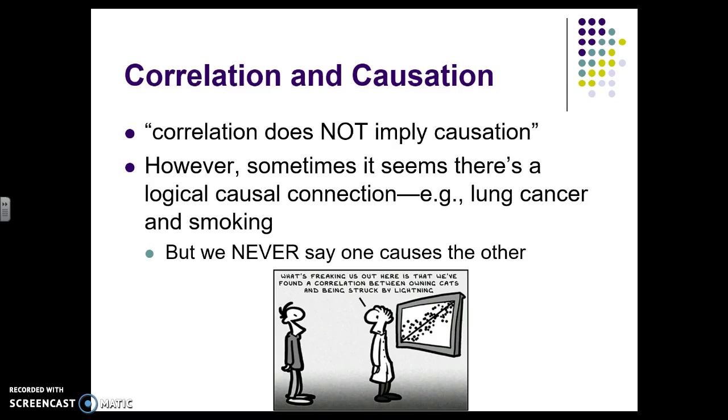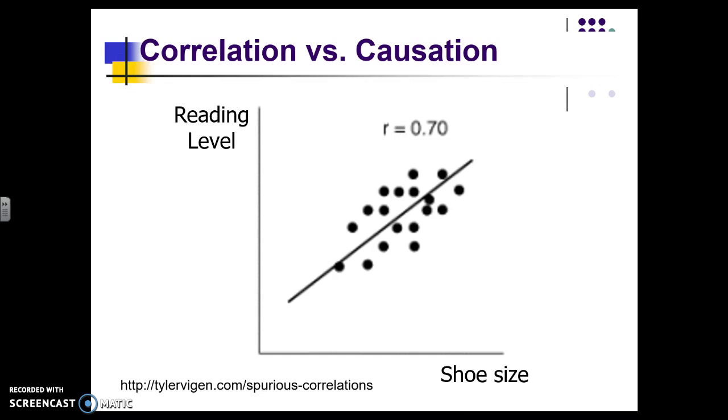Please keep in mind that correlation is not causation. There could be a logical connection between the two, and we have found out that there is a relationship between the two, but this is not a cause and effect relationship. For example, there is an R of 0.7.